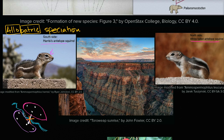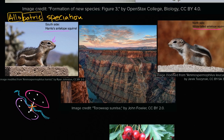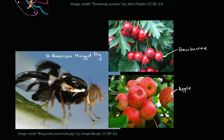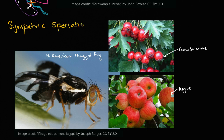But what about situations where they stay in the same place? Where theoretically they could get together and interact — could you still have speciation? The answer is yes. That form of speciation, where you are still in the same geography, is called sympatric speciation. Examples of sympatric speciation are a little less obvious or intuitive.